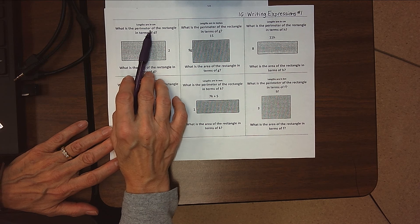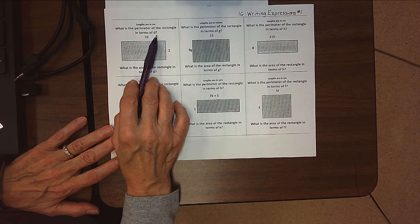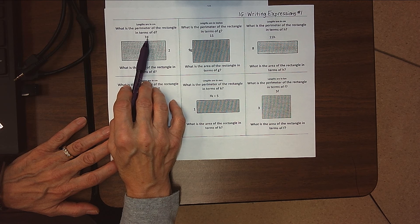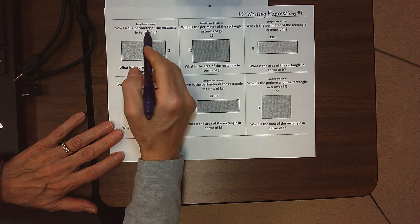That just means we're going to leave the d in there. We're not replacing the d with a number. So for this first one, what is the perimeter of the rectangle in terms of d?